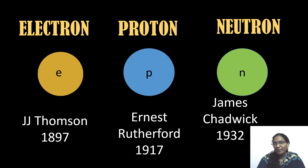Electron was discovered by J.J. Thomson in the year 1897 and proton was discovered by Ernest Rutherford in the year 1917. Neutron was discovered by James Chadwick in the year 1932.